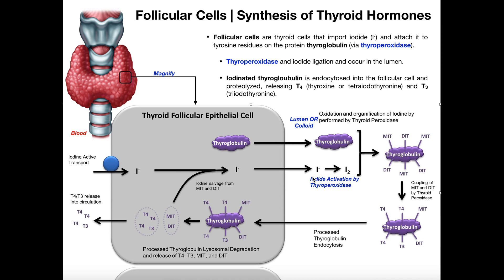The iodide has to be activated by the enzyme thyroid peroxidase. The exact activation mechanism is beyond the scope of anatomy and physiology — it involves some complicated biochemistry. It suffices to say that thyroid peroxidase activates the iodide and then attaches it to thyroglobulin, specifically to the tyrosine amino acids on thyroglobulin, producing iodinated thyroglobulin.